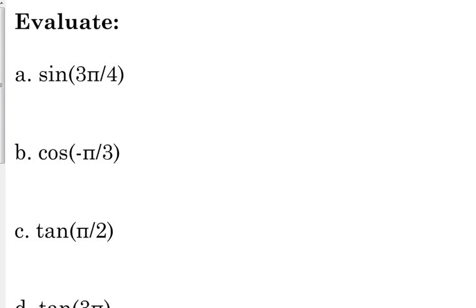The sine of 3π over 4. Over 4 angles are the easy ones, square root 2 over 2, you just got to decide whether it's positive or negative. 3π over 4 is in the second quadrant. So y coordinates are positive in the second quadrant, so that's positive square root 2 over 2. Or again, you have your unit circle in front of you, just find 3π over 4, sine is the y coordinate.